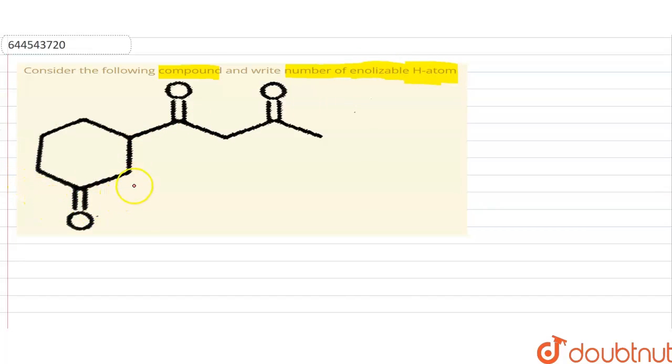If we count the enolizable H atom, first here it is one, and here it is another one, second. Here it is the third, here it is fourth, here it is fifth, and here it is sixth, and here it is seventh, here it is eighth, here it is ninth, here it is tenth.